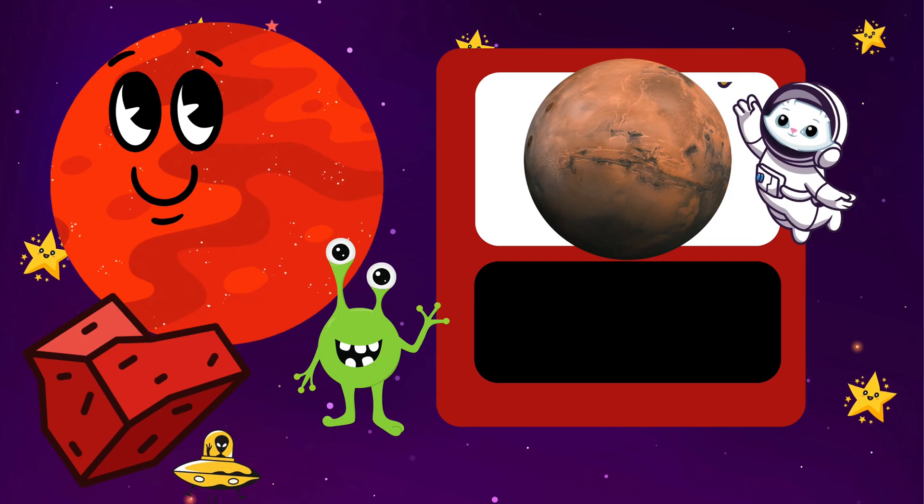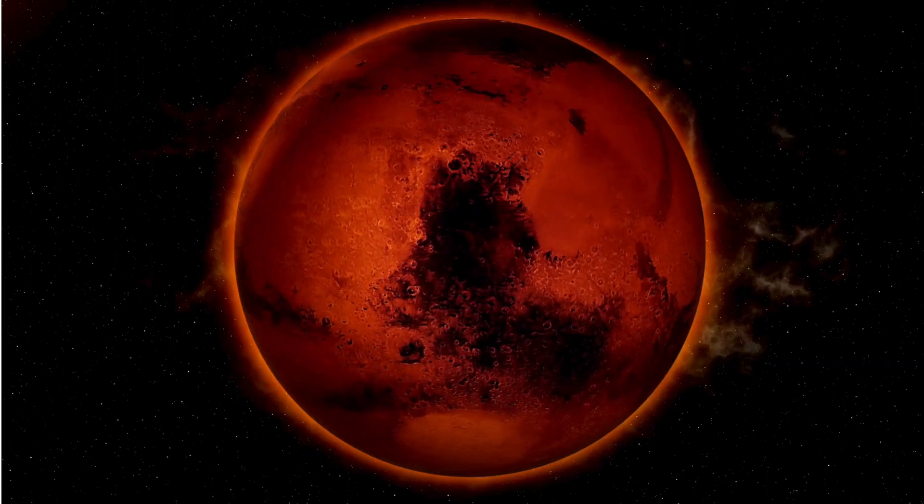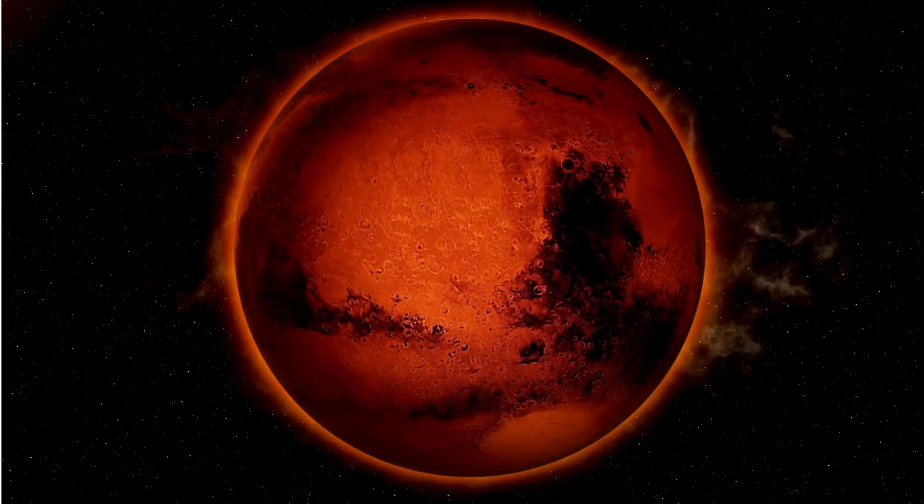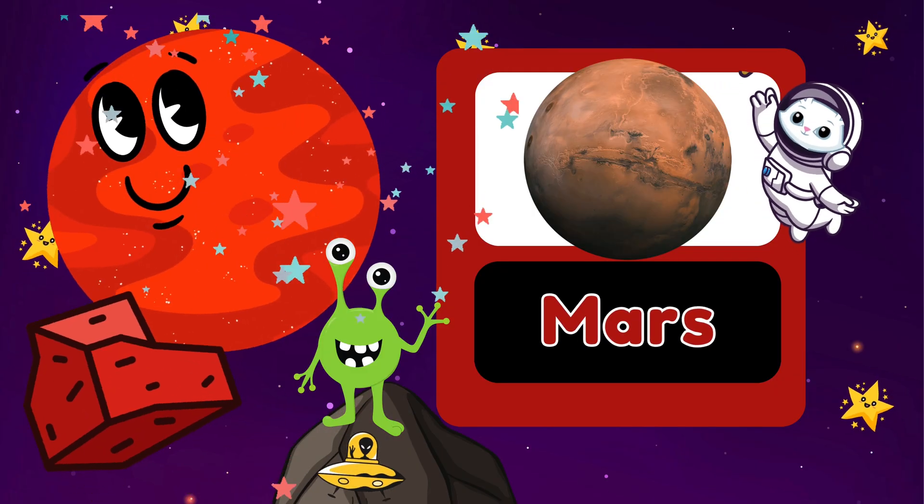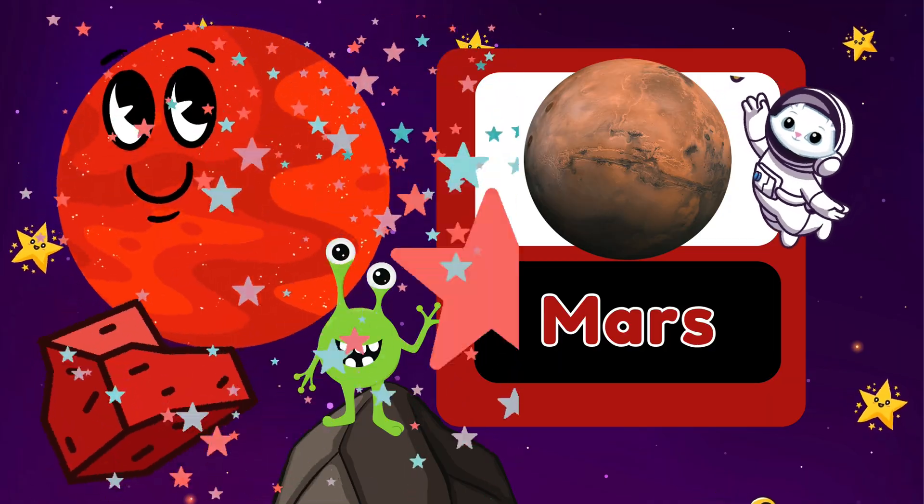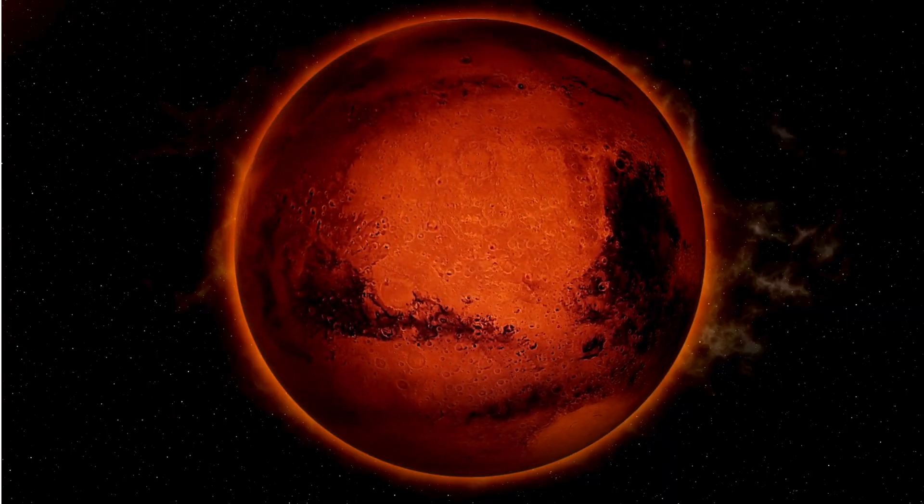Up next is Mars. Can you say Mars? Great! Here are three facts about Mars. Mars is known as the red planet because of its reddish color. It has the largest volcano in the solar system called Olympus Mons. Mars has two small moons named Phobos and Deimos. Here comes Jupiter.